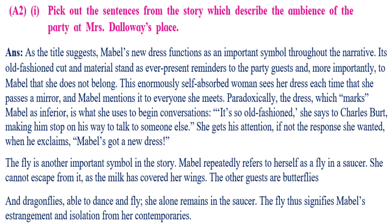She says 'It's so old-fashioned' to Charles Burt, making him stop on his way to talk to someone else. She gets his attention, if not the response she wanted, when he exclaims 'My Bell's got a new dress!' The fly is another important symbol in the story. Mabel repeatedly refers to herself as a fly in a saucer she cannot escape from, as the milk has covered her wings. The other guests are butterflies and dragonflies, able to dance and fly. She alone remains in the saucer. The fly signifies Mabel's estrangement and isolation from her contemporaries.